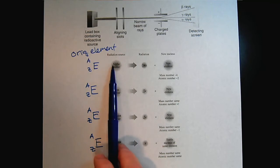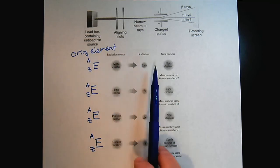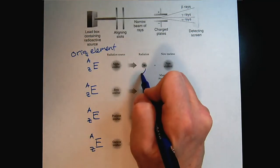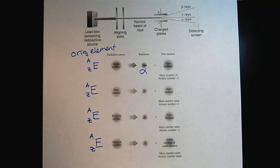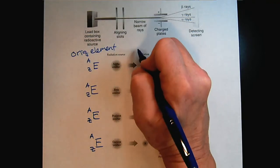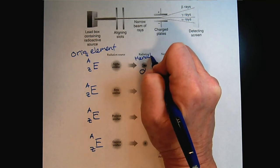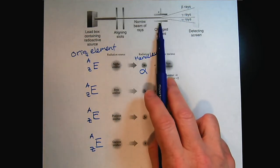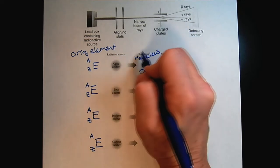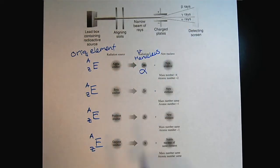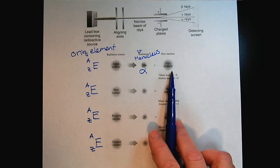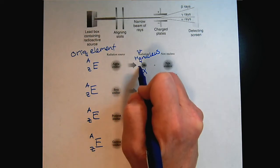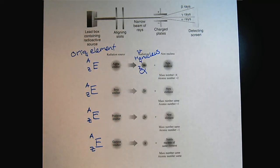All right, so if our original element is an alpha emitter, basically what it's releasing is a helium nucleus. So the helium nucleus can be described with an alpha symbol, and remember that it is a helium nucleus. So it would have charge, and that's the positive charge that's attracted to the negative plate. And then we will get a new element because the helium nucleus has a mass number of four and an atomic number of two.